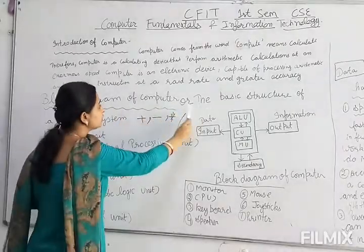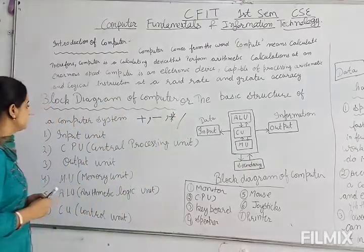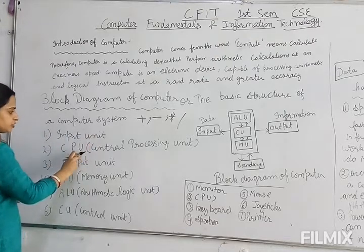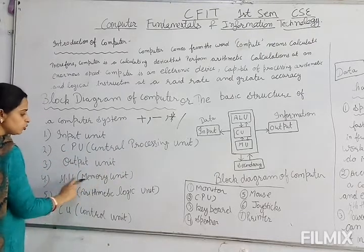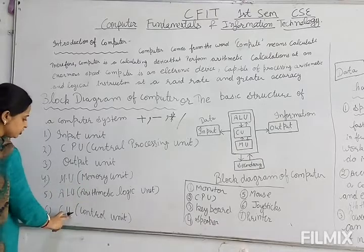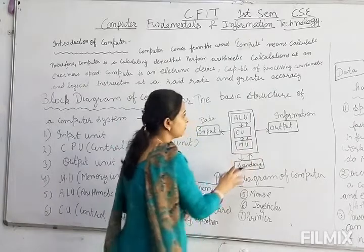Block diagram of computer और basic structure of computer system. इसमें हमारे ये parts आते हैं: Input Unit, CPU (Central Processing Unit), Output Unit, MU (Memory Unit), ALU (Arithmetic Logical Unit), CU (Control Unit). यह हमारा block diagram है.